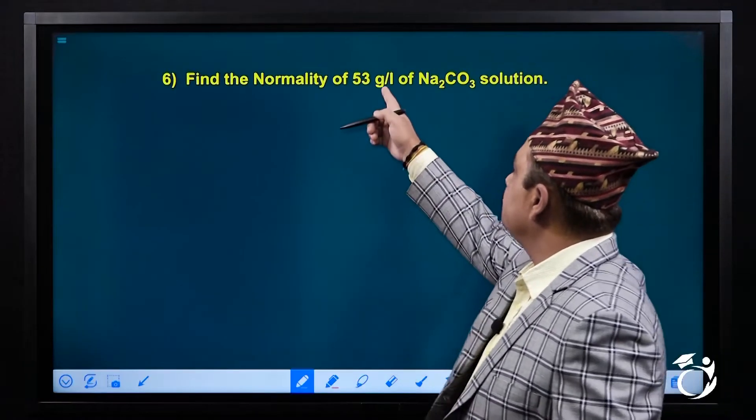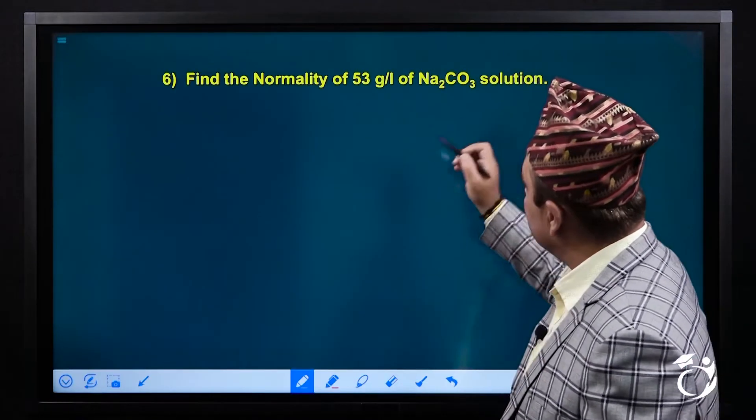Find the normality of 53 gram per liter of sodium carbonate.